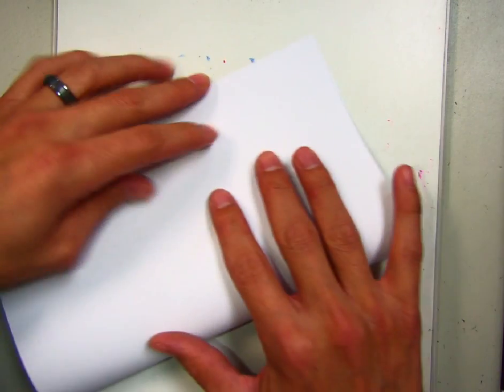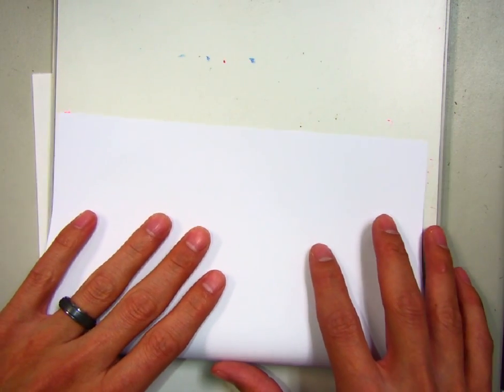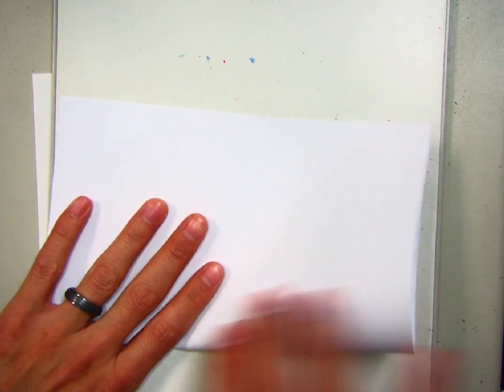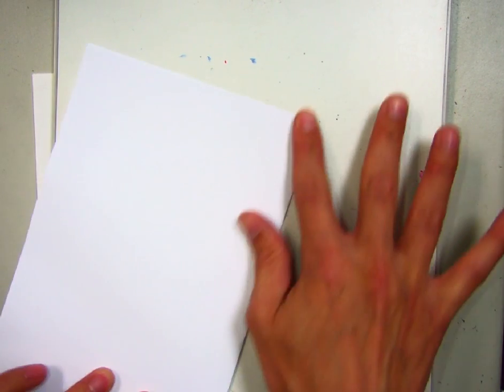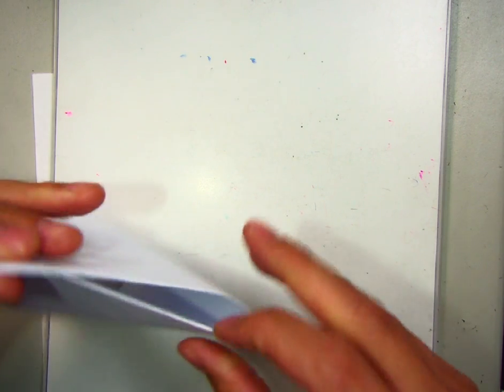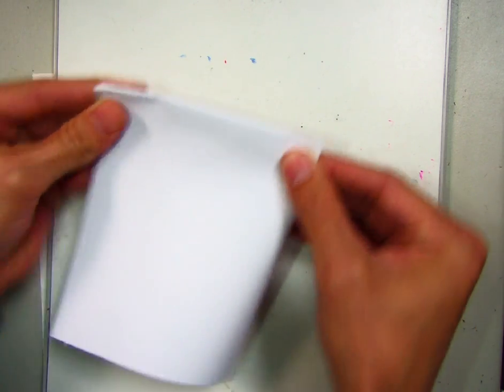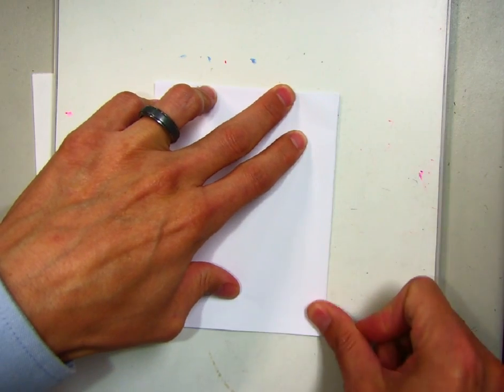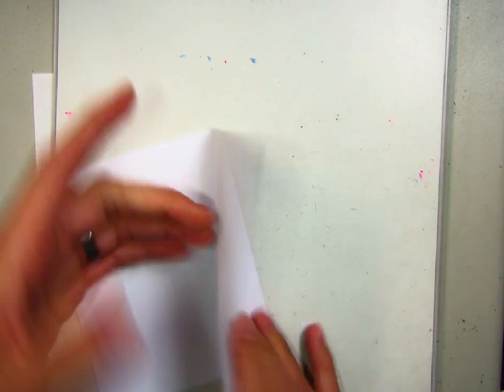First thing you want to do is I'm going to start with a blank sheet of paper. Take your blank sheet of paper and fold it in half. We're going to fold it hamburger style just in half, just like that. So I took this sheet of paper, fold it in half. Then I'm going to fold it the other way in half.